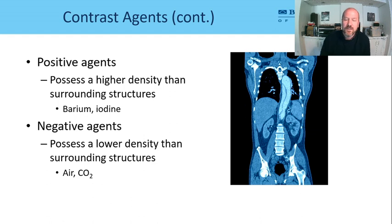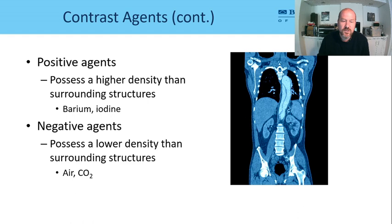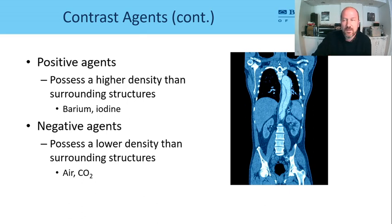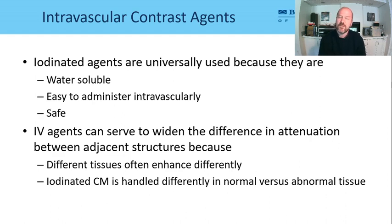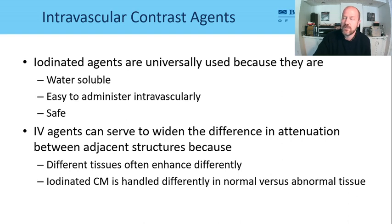There are both positive and negative contrast agents. Positive agents include barium and iodine, which is why we can see the aortic dissection. Negative agents — things like gas — are why we can see that this patient needs to pass gas; there's a lot of air in the rectum. IV contrast agents are largely iodinated because they're water-soluble, easy to administer, and relatively safe. Iodine is a metalloid that attenuates more X-rays than normal blood, giving us wide differentiation in attenuation.